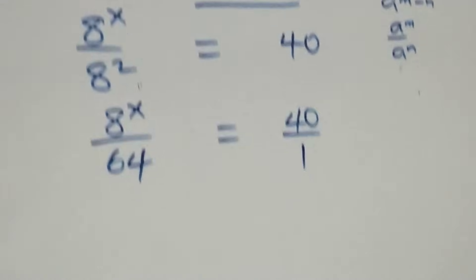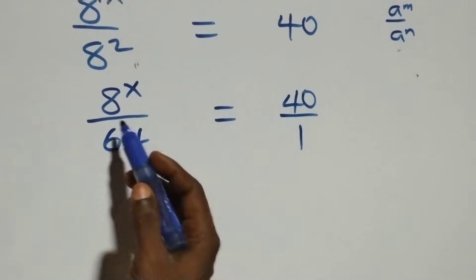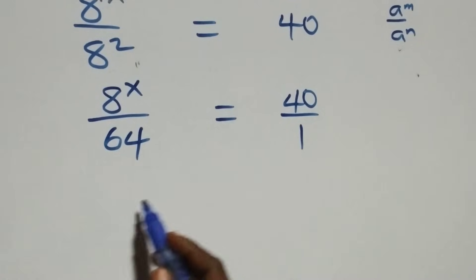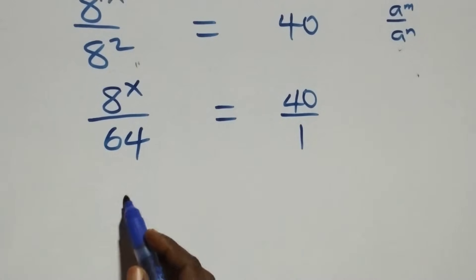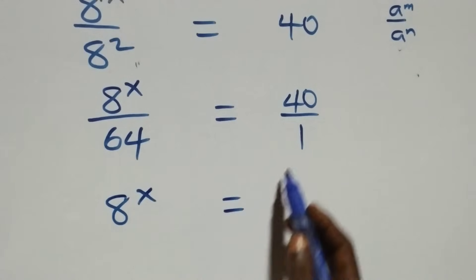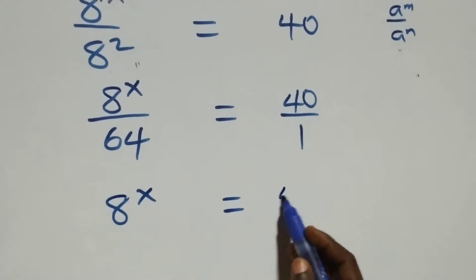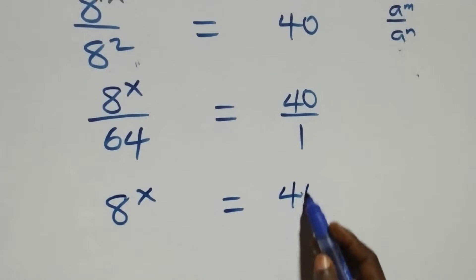Our next step is to cross multiply. That gives us 8 raised to power x times 1, which is simply 8 raised to power x, equals 40 times 64.